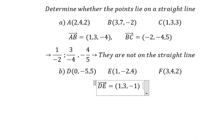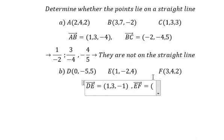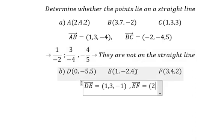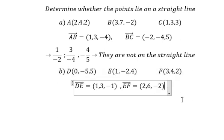Now let's find vector EF. We have 3 minus 1, which gives 2. Then 4 minus negative 2, which gives 6. Then 2 minus 4, which gives negative 2. Now we put 1 divided by 2, 3 divided by 6, and negative 1 divided by negative 2.